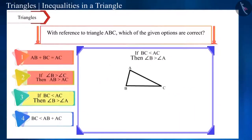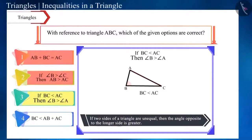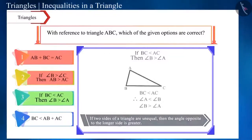Now let's move to the next option. Here, side BC is smaller than side AC. That is, the angle opposite to side BC will be smaller than the angle opposite to the side AC. Which means angle A will be smaller than angle B. Or, in other words, angle B will be greater than angle A. Therefore, this option is correct.